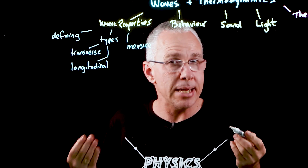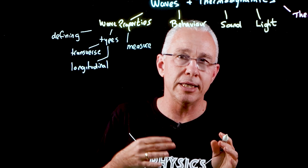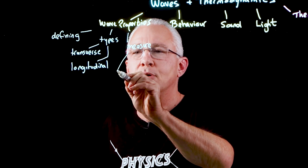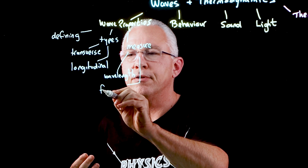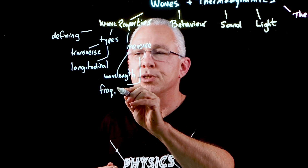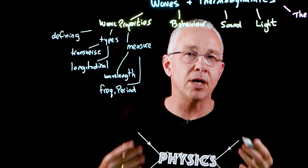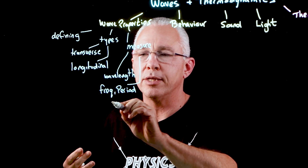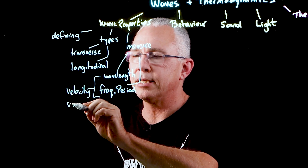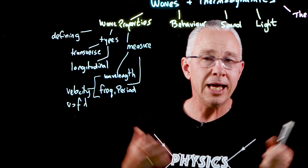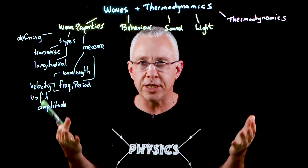We measure waves in a number of ways. In terms of distance, we have the concept of wavelength. In terms of time, we have frequency and the associated period. Because a wave has a certain distance with respect to time, it has a velocity, which is simply v = f·λ. Finally, we have the height of the wave, which is the amplitude.